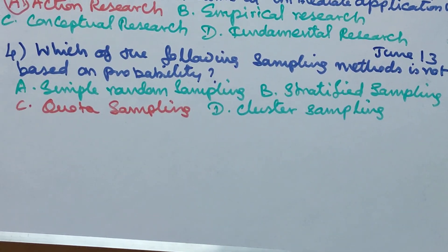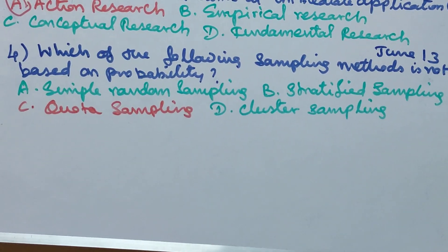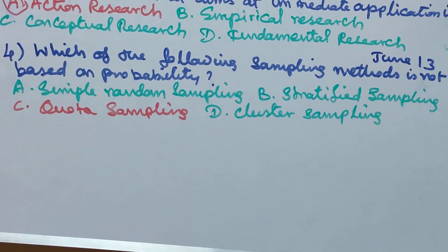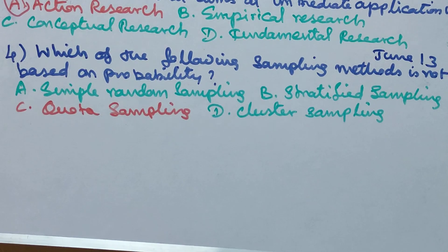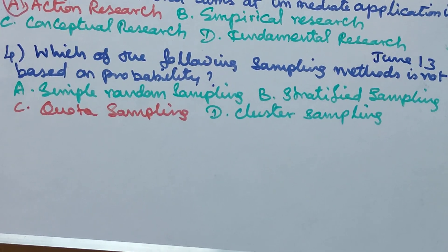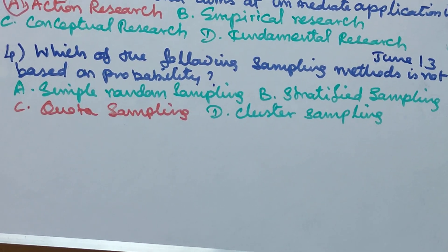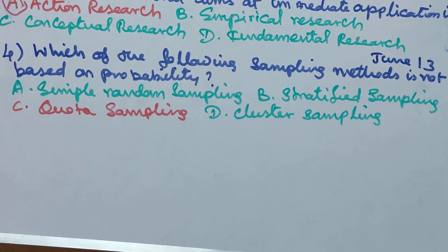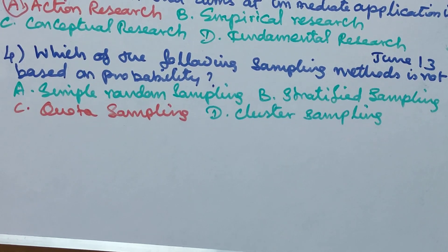Which of the following sampling methods is not based on probability? (June 2013) The options are: Simple Random Sampling, Stratified Sampling, Cluster Sampling, and Quota Sampling.